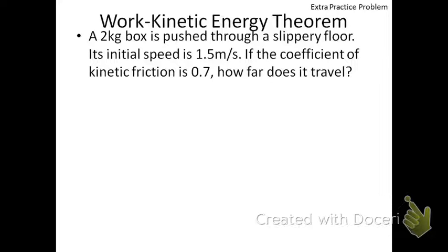As always, before we start a problem, let's start breaking it down and what information we actually do know. The first detail they give us in this problem is the mass of this box, 2 kilograms. The initial speed, which is also initial velocity, is 1.5 meters per second. The coefficient of kinetic friction, μ_k, is 0.7. Notice that's unitless, so that tends to be a dead giveaway for coefficient of kinetic friction.